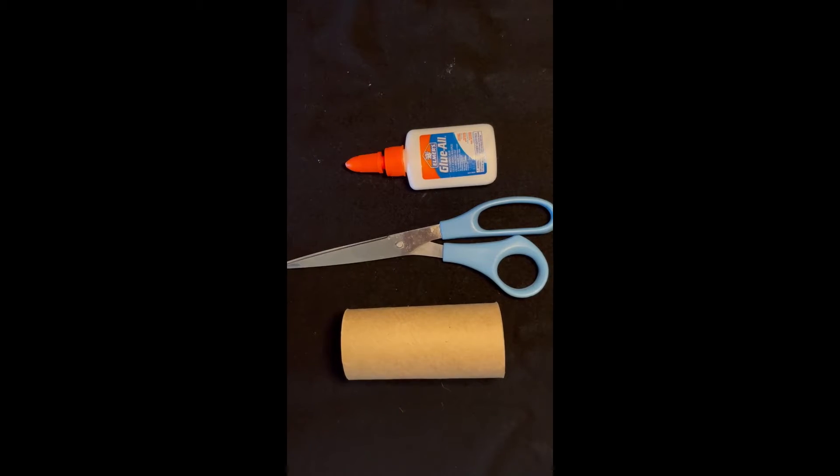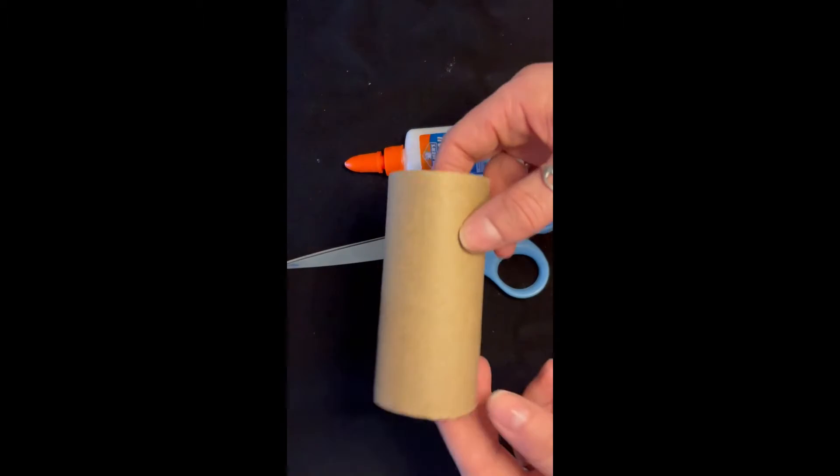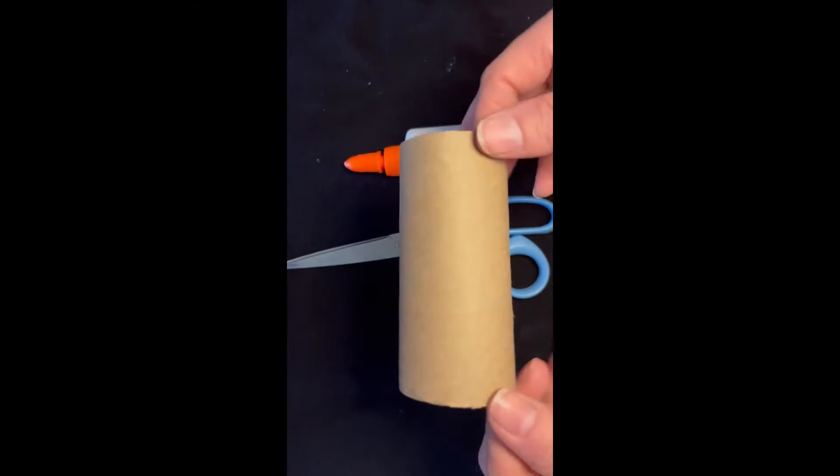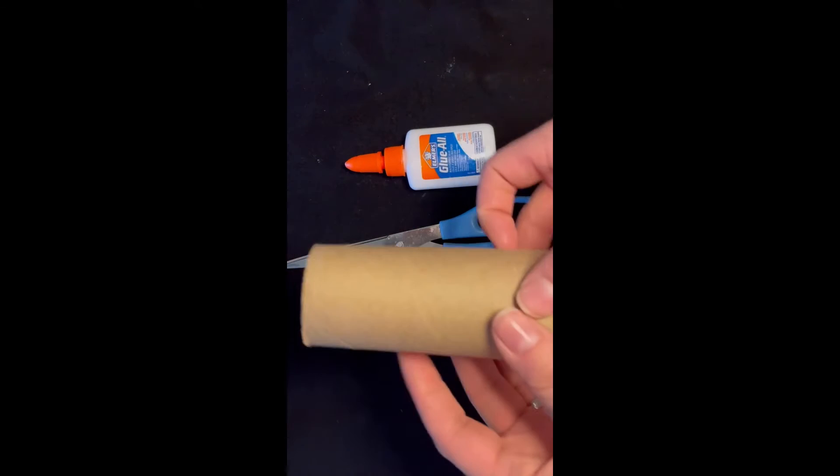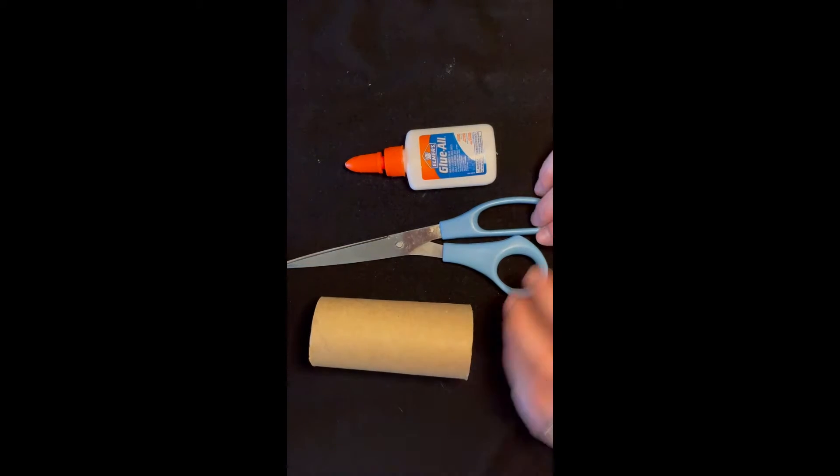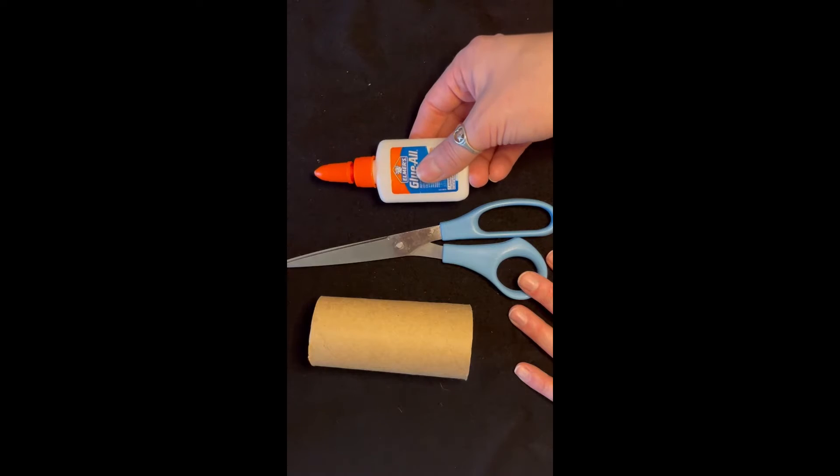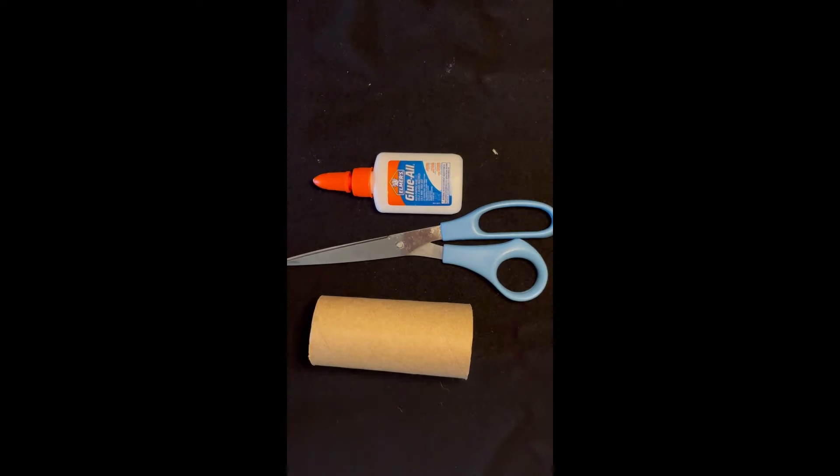Okay, like I said, all you need for this project is a toilet paper tube, or you can use a paper towel tube if you have those, a pair of scissors and glue. If you need something clampy to keep things in place while it dries, you can also use binder clips or paper clips.